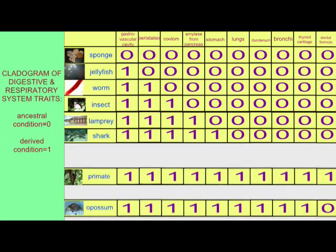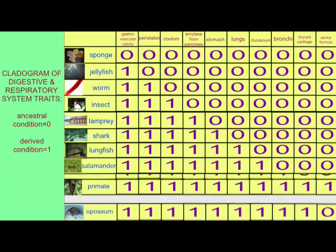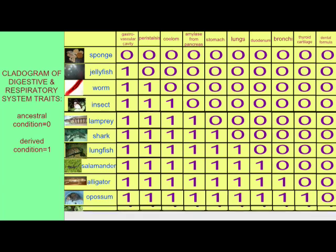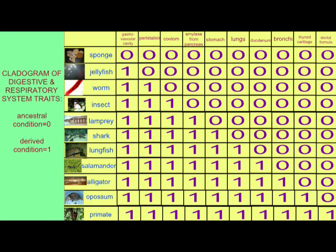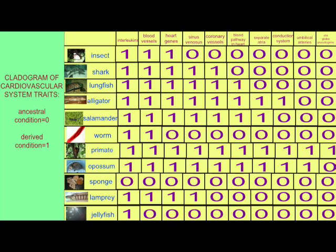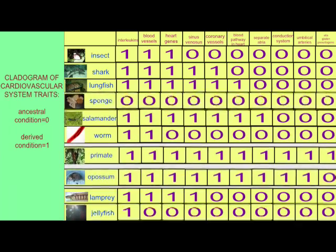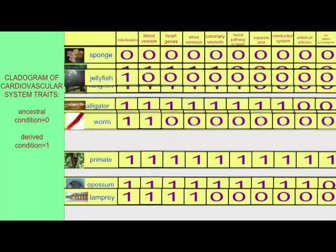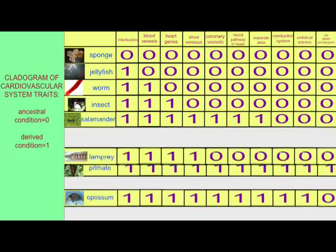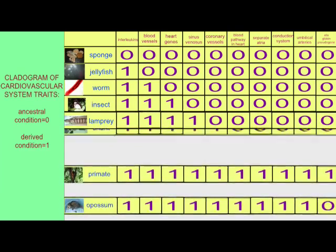If we studied the cardiovascular system, we could once again come up with an equivalent set of relationships. If we studied the urinary and reproductive systems, the same would apply.